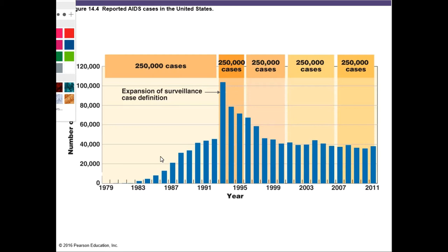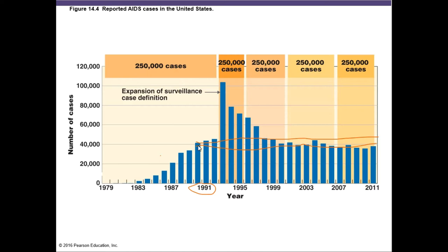Here we have a graph showing that from 1991, the number of new cases of individuals with AIDS was endemic at around 40,000 — about 40,000 cases would increase per year. But around 1993–1994, there was a huge increase in the number of cases, which would be considered an epidemic, with 250,000 cases increasing within just three years. Then the number started to go down again, returning to the endemic level.